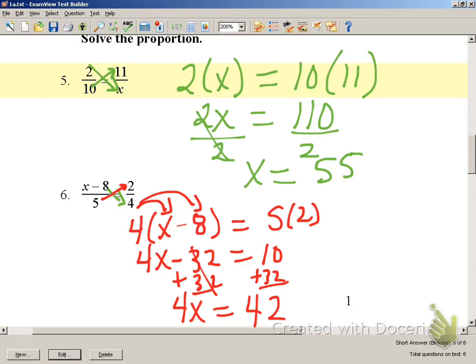In order to solve for X, we must divide by 4. So I'm going to rewrite it up here. 4X equals 42, divide by 4. X equals, we can reduce that as 21 halves.